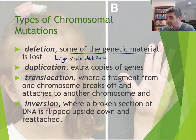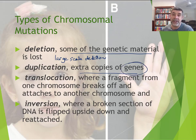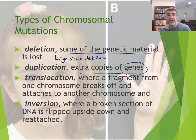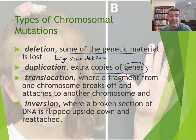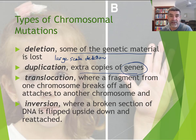Duplication involves extra copies of genetic material. Again, at this large scale we're looking at multiple genes being copied, so you have large increases in the length of chromosomes as a result of these additional genes. We're not talking about just a couple of nucleotides being added as in a frameshift — now we're talking about massive amounts of DNA being copied on a larger scale.